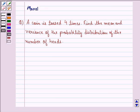Hi and welcome to the session. Let's work out the following question. The question says: a coin is tossed 4 times. Find the mean and variance of the probability distribution of the number of heads. Let us see the solution to this question.